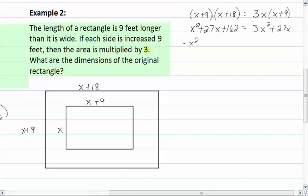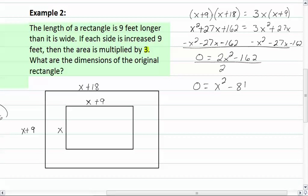We're going to move all this stuff over to the other side, and that's going to give us zero equal to two x squared minus 162. These are both divisible by two, so we'll divide everything by two. So we get zero is equal to x squared minus eighty-one.